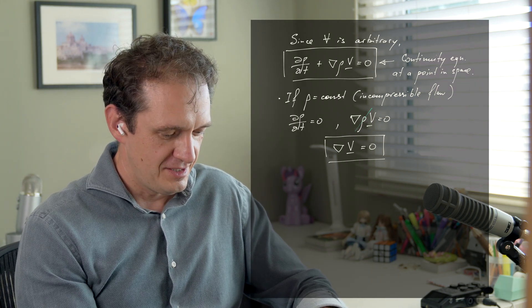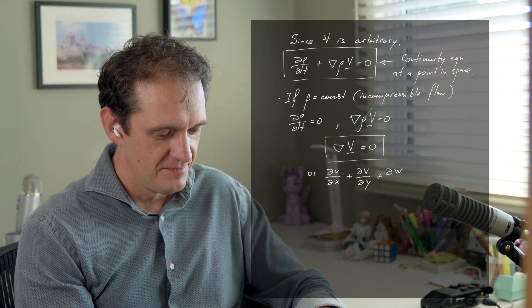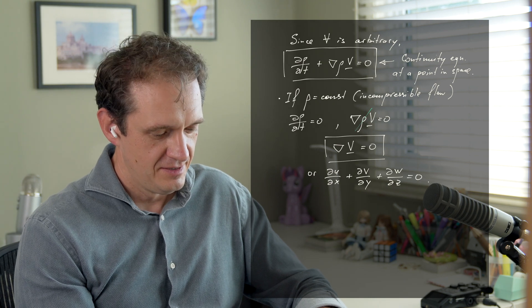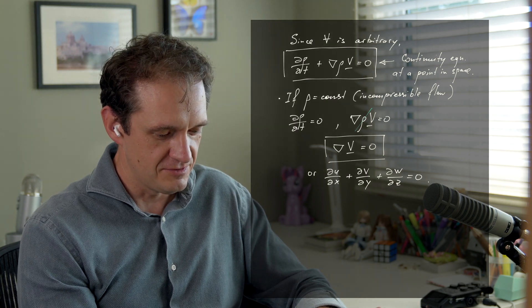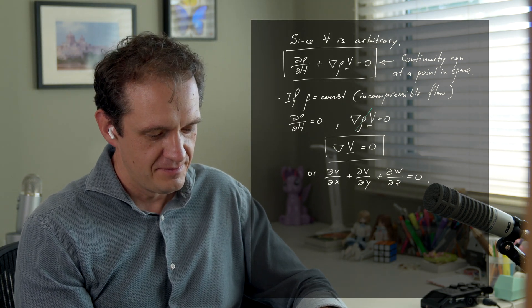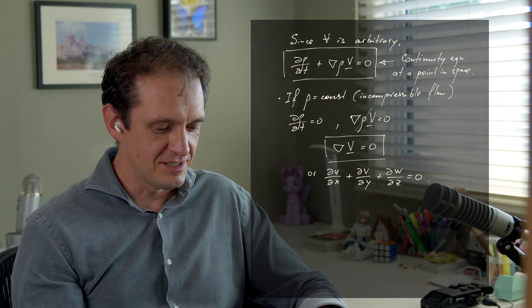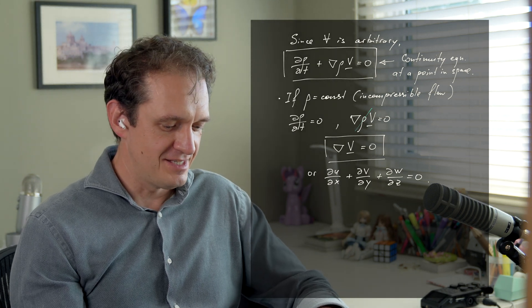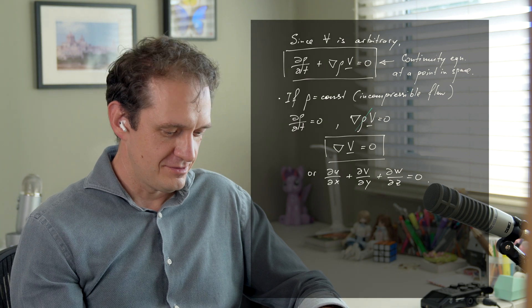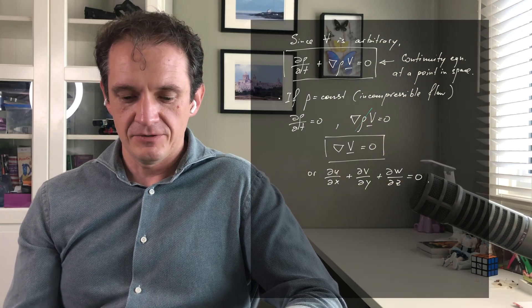So this is the vector form. In terms of Cartesians, for example, this is du/dx plus dv/dy plus dw/dz equals zero. This is the continuity for incompressible flow. Again, note that it's for an incompressible flow that's not necessarily steady. Time doesn't appear in this equation, but you cannot really tell whether the flow is steady or unsteady because u, v, and w can be functions of time as well.